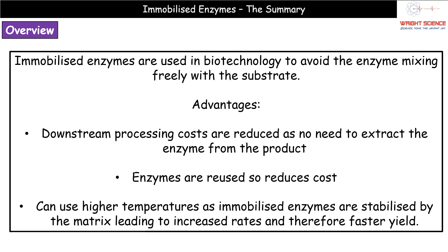Advantages — this is a common question on your exam papers. First: downstream processing costs are reduced. Downstream processing is what happens after we've made our product. Because our enzymes are immobilized, they're not freely mixing with the substrate or product, so we don't need to extract the enzyme from the product, making it cheaper. In some past exam questions that's been worth two separate marking points — one for reduced downstream processing costs, one for no need to extract the enzyme from the product.